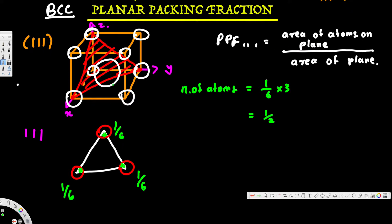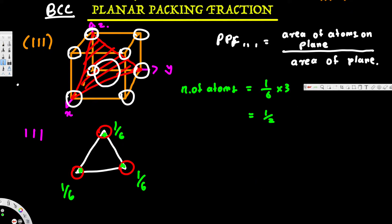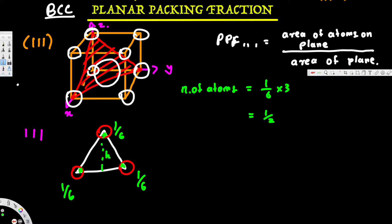Since this is a plane, we are only looking at the circular cross-section of atoms, so the area of atoms is π·R². Now we need to calculate the area of the plane. The plane is a triangle, and since this is an equilateral triangle, we label the height as h and the base as b, which is the same on all sides. Area of a triangle = (1/2) × base × height.